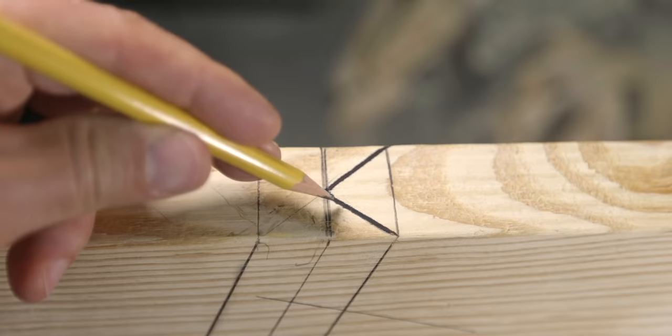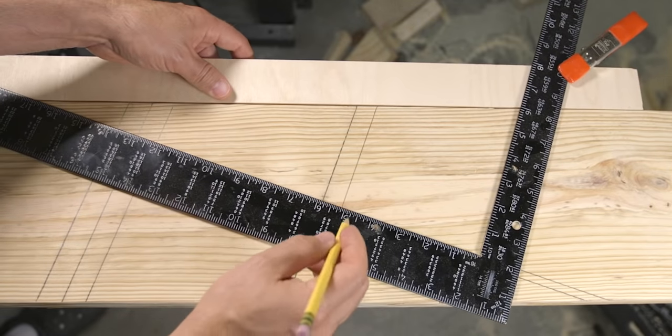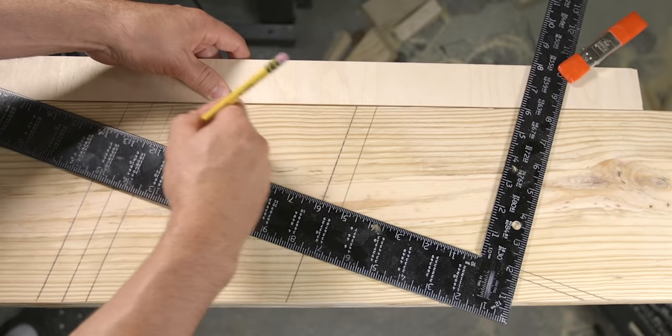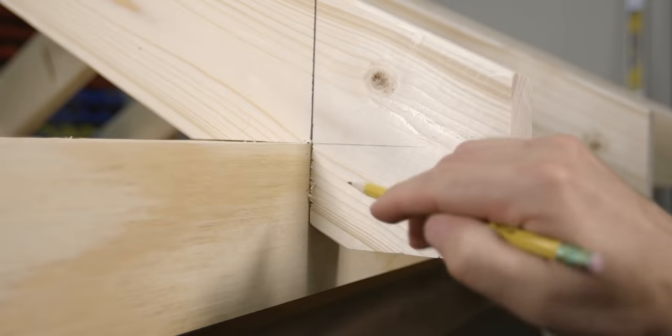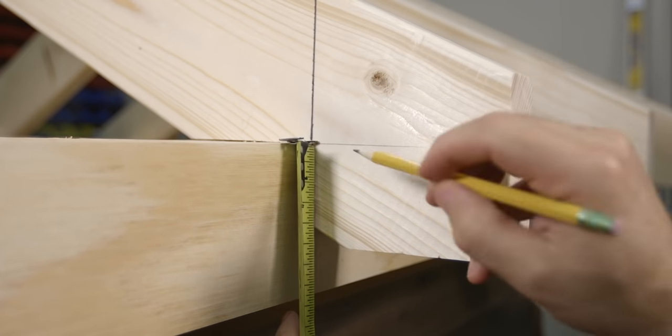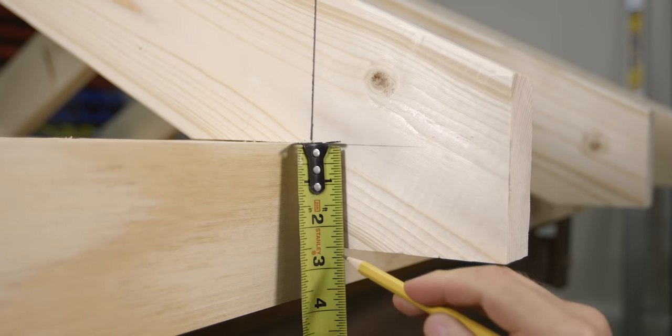The last thing to lay out would be the soffit cut, and in order to do that, we need to first extend our seat cut line over to meet the overhang or fascia cut line. And now it's back to the common rafter to measure the distance between the seat cut and the soffit, which is two and five-eighths.